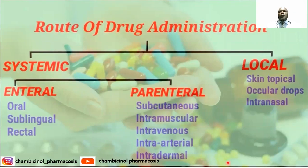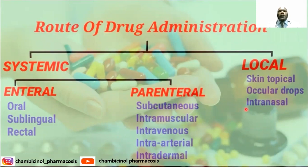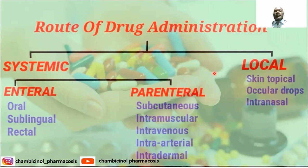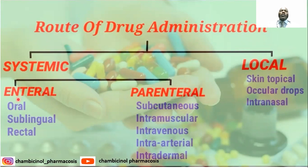Another aspect is the route of drug administration. We have different routes, classified into two groups: systemic routes and local routes of drug administration, based on the desired action — whether systemic or local effect. For systemic effect, taking the drug internally through the GI tract includes oral absorption, which is the most common route of drug administration.